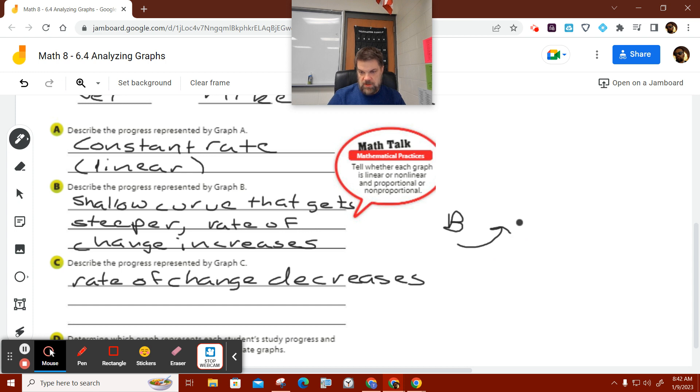For graph C, it tends to curve down. So notice that the rate of change increases or decreases.